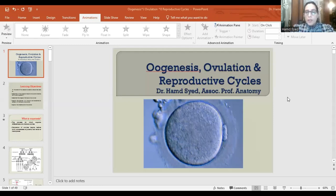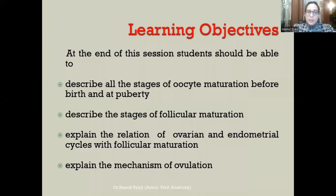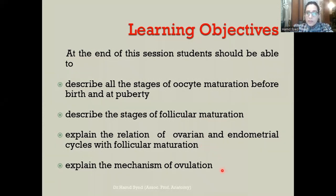Hello and welcome to Anatomy Mentor. Today our topic is oogenesis, ovulation, and reproductive cycles — a topic of embryology. We shall discuss all the stages of oocyte maturation before birth and at puberty, the stages of follicular maturation, the relation of ovarian and endometrial cycles with follicular maturation, the mechanism of ovulation, and clinical conditions including polycystic ovarian syndrome and endometriosis.